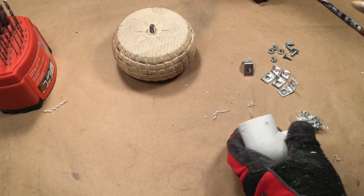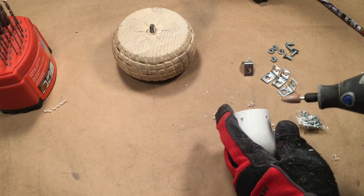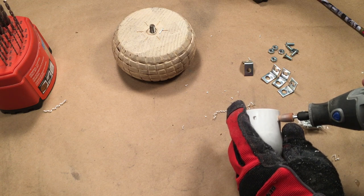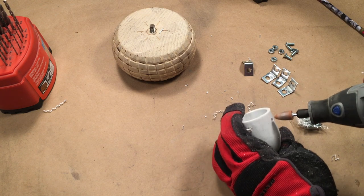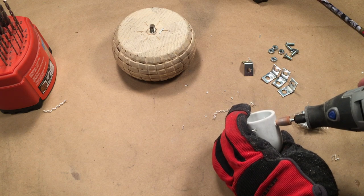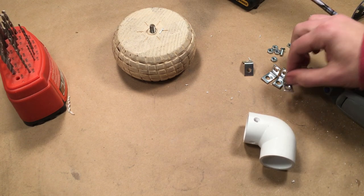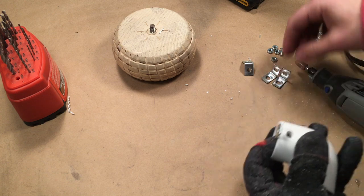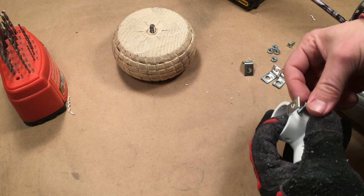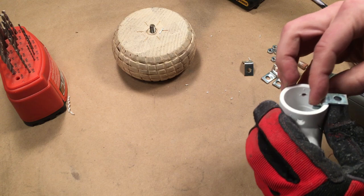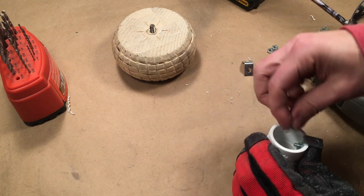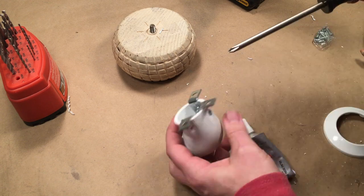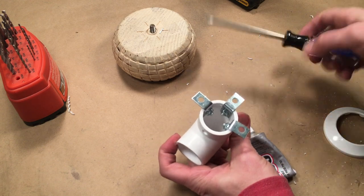Next, I used a Dremel cone bit to countersink the screw head. Mount the corner brace inside the one inch PVC elbow and secure it with the number 8 half inch screw and nut. Repeat for the other side and rear of the PVC elbow.